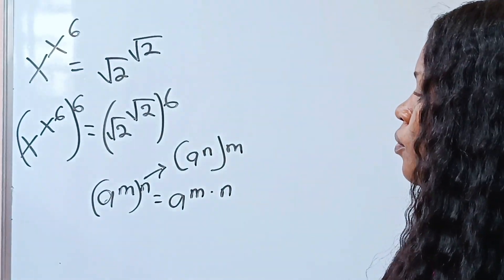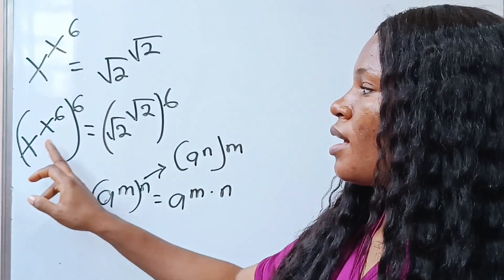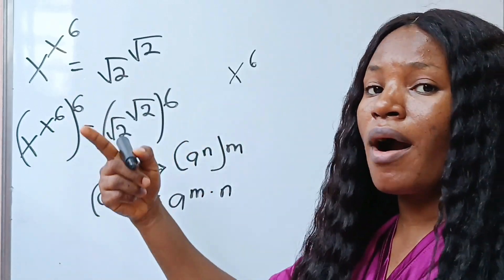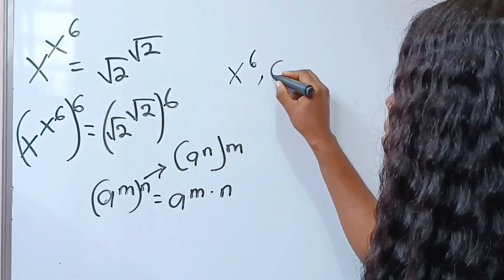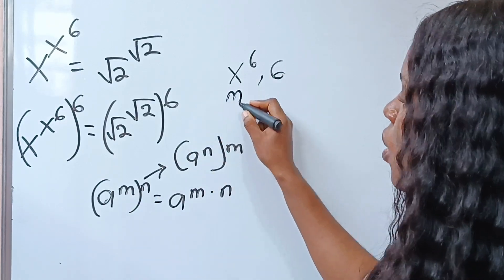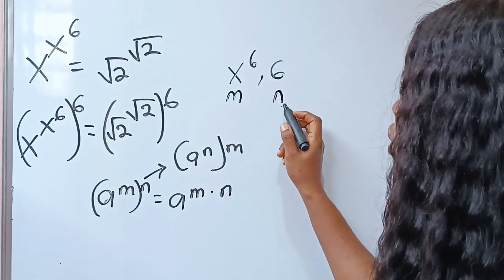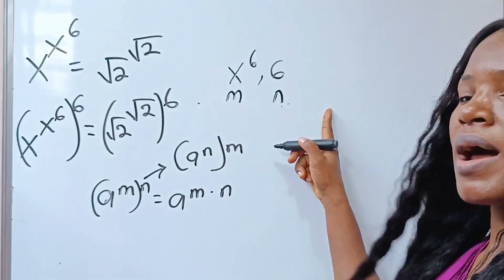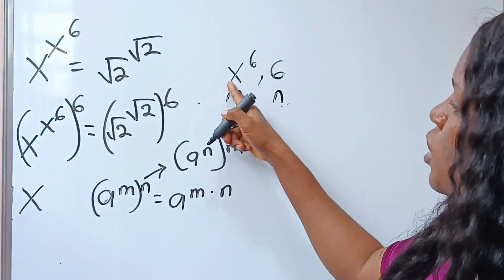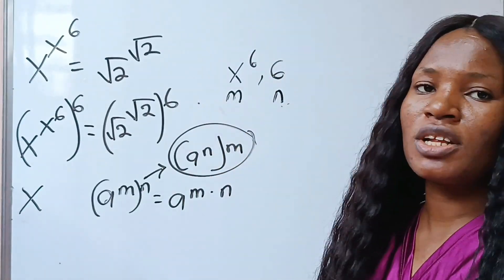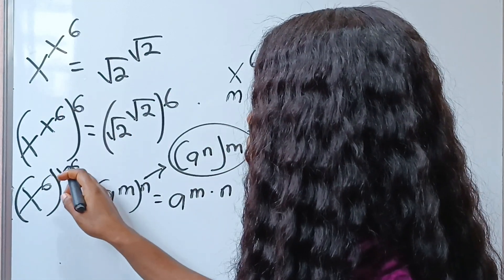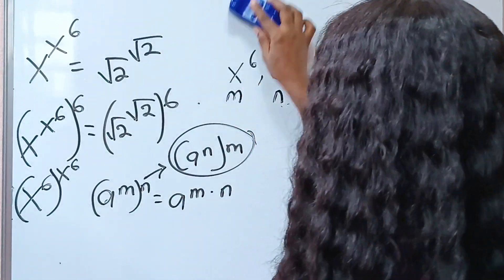We are going to do the same thing here. In this case we have x to the power of 6 — that is, this x is raised to the power of x to the power of 6, and also to the power of 6. If we compare this with the rule, our m is x to the power of 6 and this is our n. Since x is our base, we can bring n in and take x to the power of 6 out. So 6 comes in and x to the power of 6 goes out.